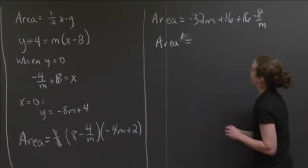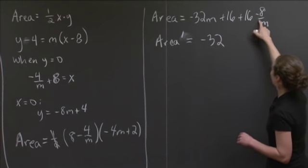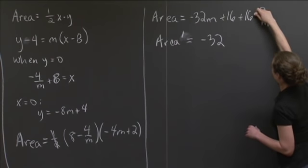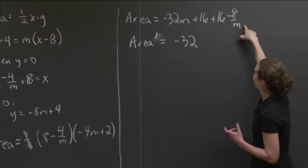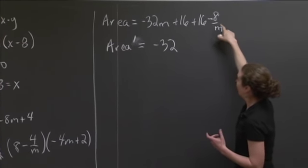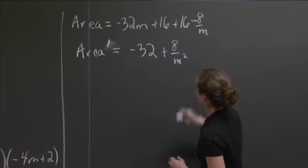Oh, so now let me just take the derivative of this. And again, I'm taking the derivative with respect to m. So here I just get -32, 0, 0. And then what's the derivative of, this is a -8/m. Well, the derivative of 1/m, if you remember, is -1/m^2. I have another negative here, so this is going to be +8/m^2, right?